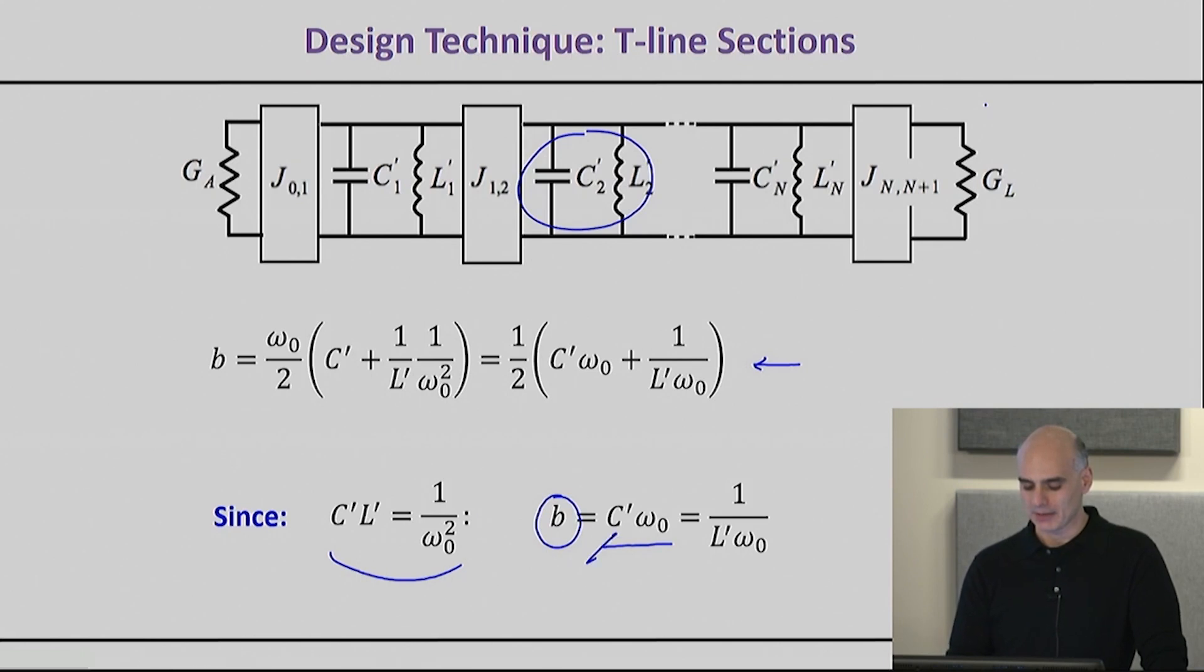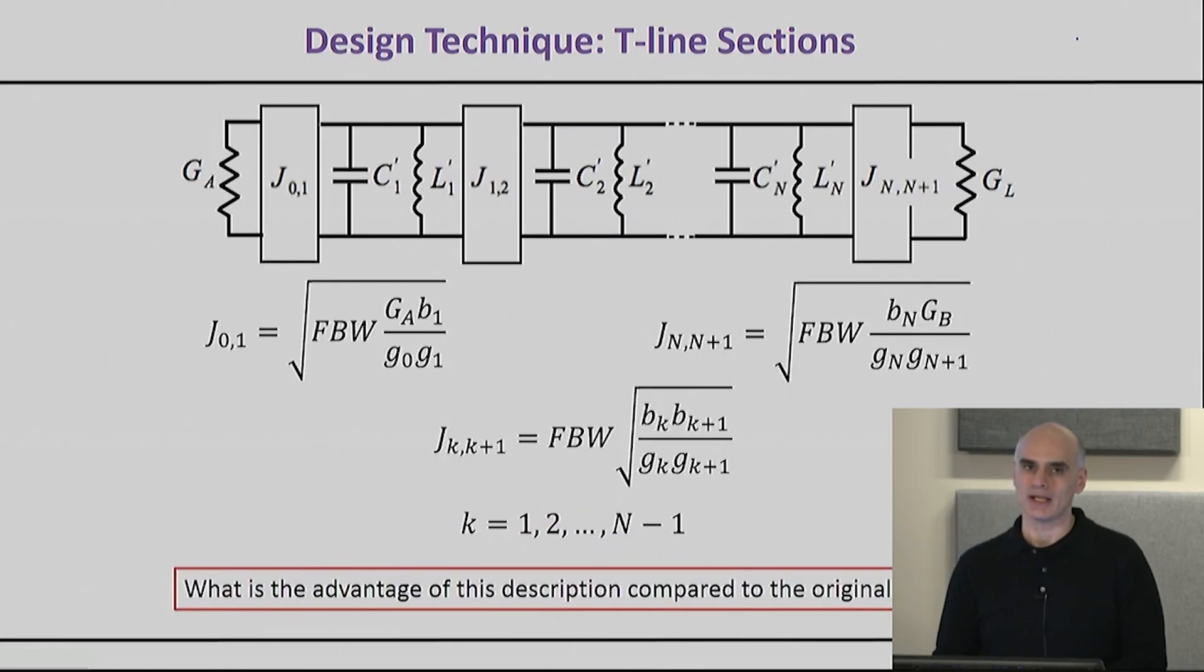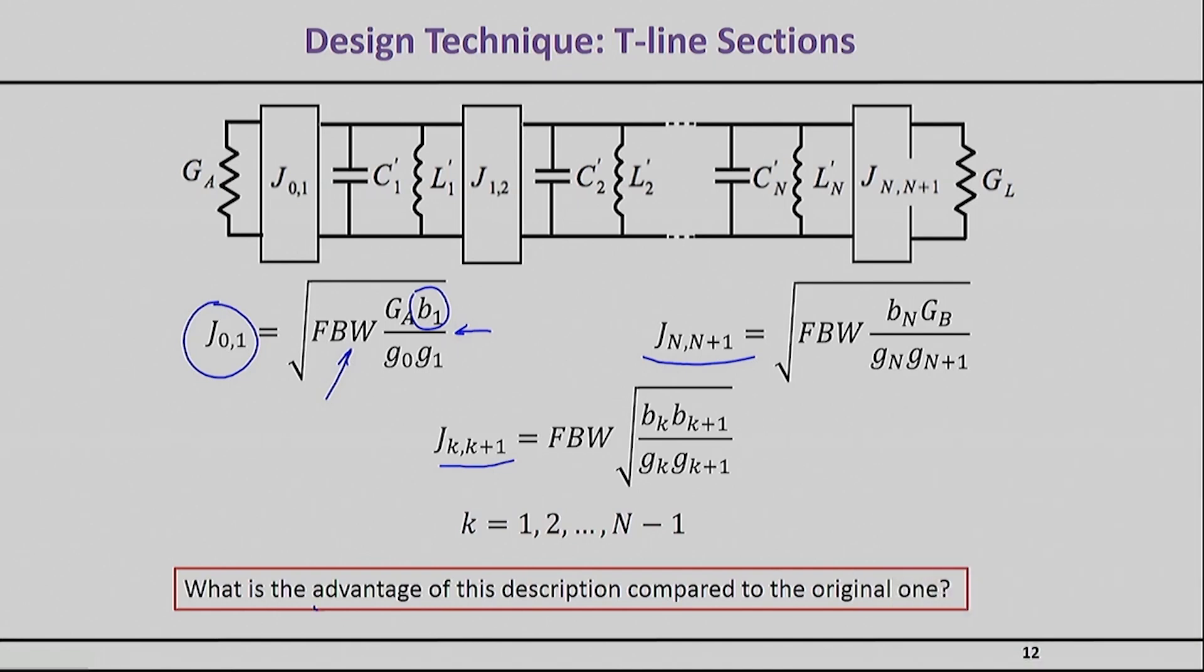For every resonator, no matter how complex, there's going to be an expression that links that b with C′ or L′. That means I can use my original equations and replace that C or L with the new b's. For example, the very first one has the equation right here where I've replaced my capacitance with b₁. As a reminder, this is the fractional bandwidth, meaning the absolute bandwidth divided by center frequency. The advantage of this description compared to the original one is that this description is applicable to any resonator type, not just the lumped element one.